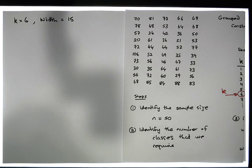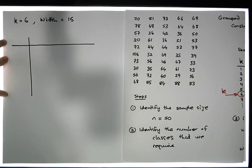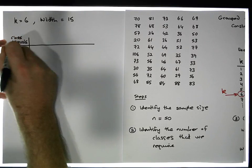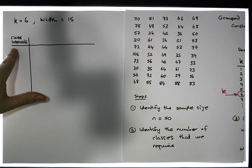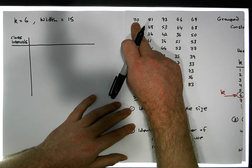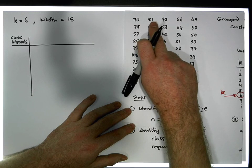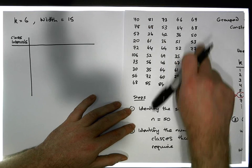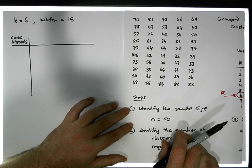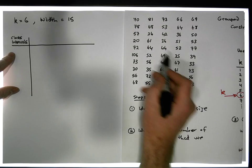To construct the distribution, we have a table with a first column representing the class intervals. These intervals are typically more descriptive — they represent the variable that was measured. For example, if these values represented how much a student spent over the weekend in euros or dollars, the label here would be 'money spent.' We always start with the smallest value in our data set, which is 20.